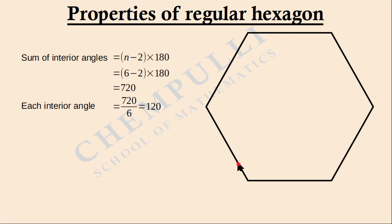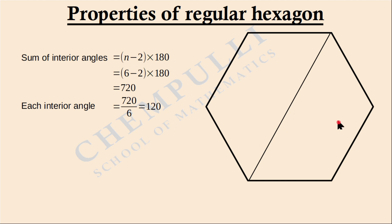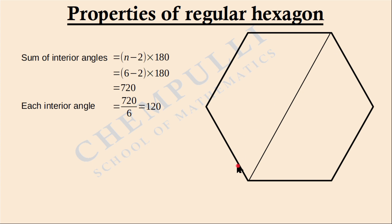Now, if we join two opposite vertices, this line divides the hexagon into two equal parts — one part is the mirror image of the other. This line acts as a line of symmetry, meaning the angles on both sides of it are equal.